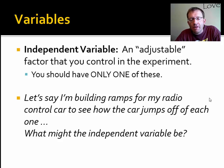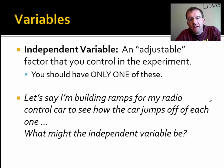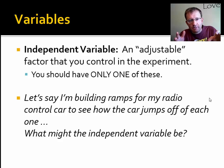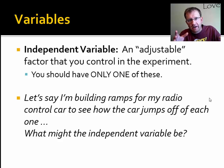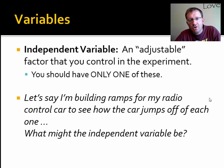The independent variable is the thing that you, as the experimenter, are controlling or adjusting. You should only have one of these. If you have more than one independent variable, a lot of things will be changing and you may not know which dependent variable is changing because of which independent variable. You won't know your cause-and-effect relationship. Having multiple independent variables makes it basically impossible to draw any kind of conclusion, which is hopefully the point — so you should only have one.